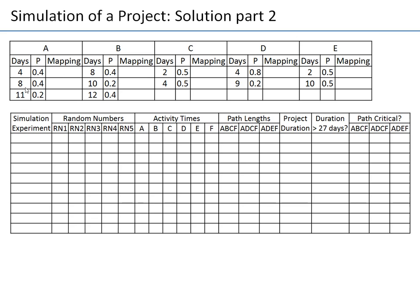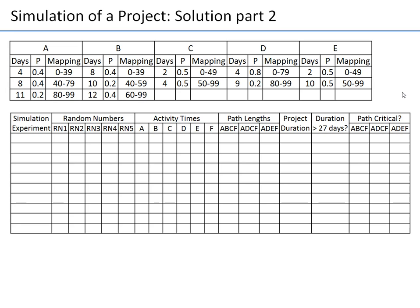For simulation with random numbers, I need a 0-to-99 mapping. For activity A: four days has 40% probability, so random numbers 00–39; eight days maps to 40–79; eleven days maps to 80–99. Similarly I create mappings for the remaining distributions for B, C, D, and E, and generate random activity times for each experiment — F always takes five days.